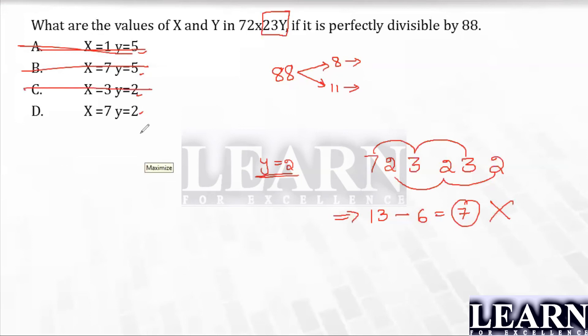So only one option, that is option D, or we can say that is the answer. If you want, you can check out with the last one: 7232. Yes, 7, 7 is 14 plus 3 gives 17, minus 2 plus 2 plus 2, 17 minus 6 gives 11. Yes, it is divisible by 11. So answer is option D.